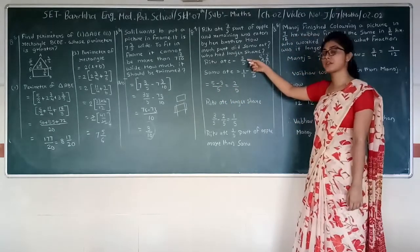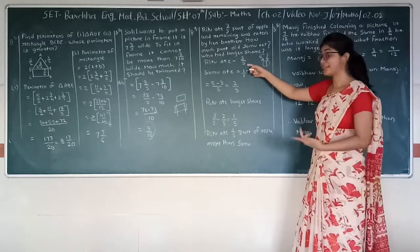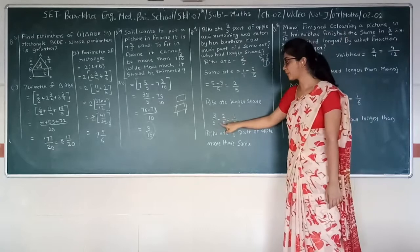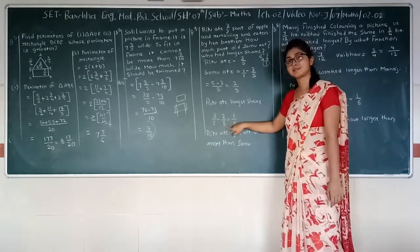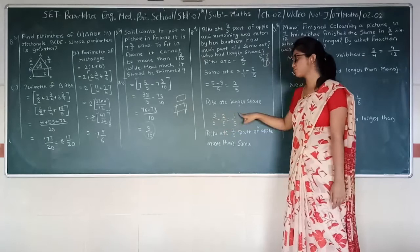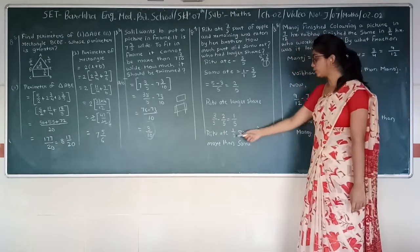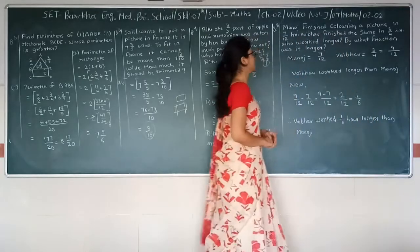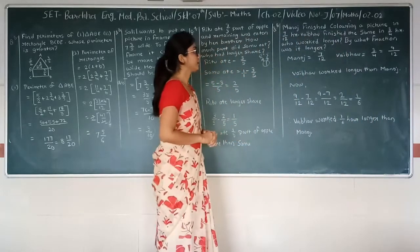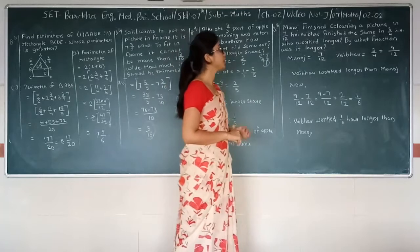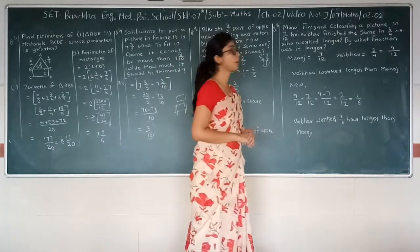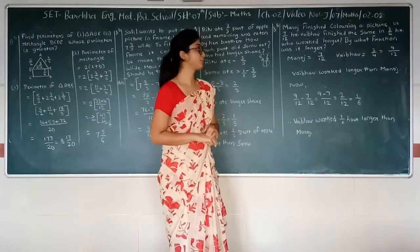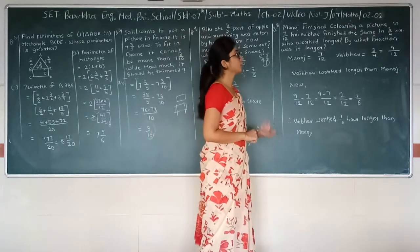So Sonu ate two upon five. Now Ritu's share which is three upon five is greater.